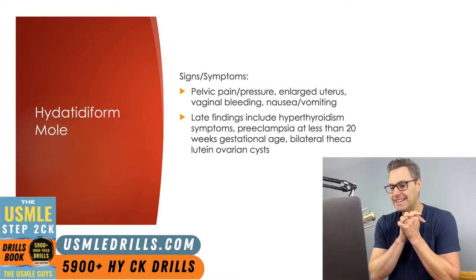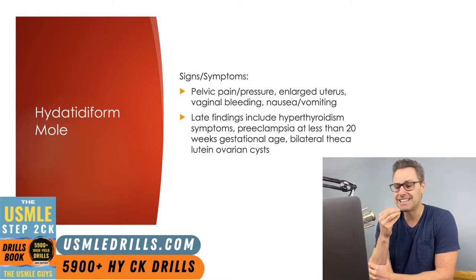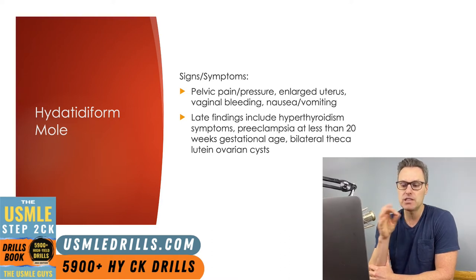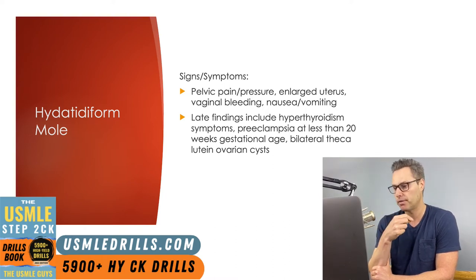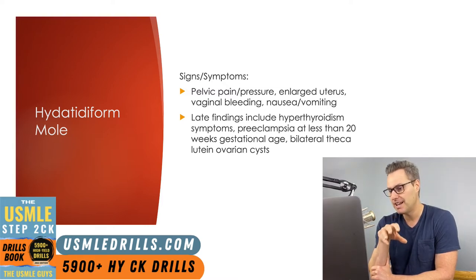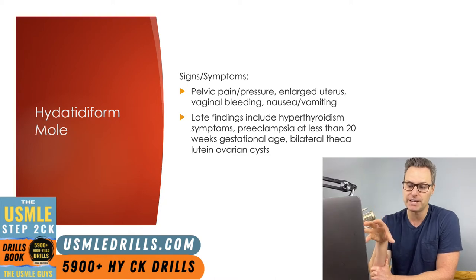Vaginal bleeding can also occur as the molar villi begins to separate from the underlying decidua. Patients can also develop nausea and vomiting as they develop hyperemesis gravidarum as a result of the molar pregnancy — keep in mind that they are associated. Now late in the molar pregnancy, symptoms of hyperthyroidism can be present, like warmth, anxiety, palpitations, and tremor. The hypothesis is that beta-HCG, present at incredibly high levels in the late molar pregnancy, acts as a thyroid stimulator because of the biological homology between beta-HCG and TSH.